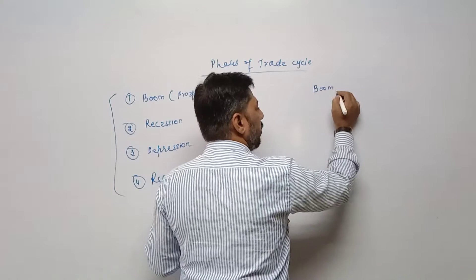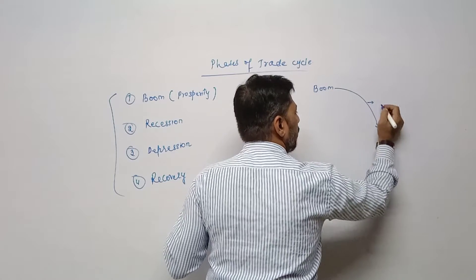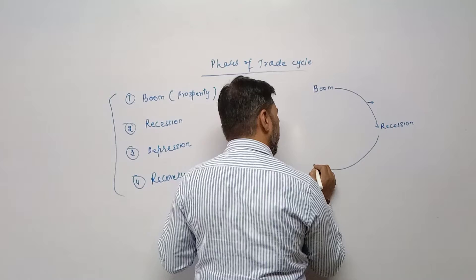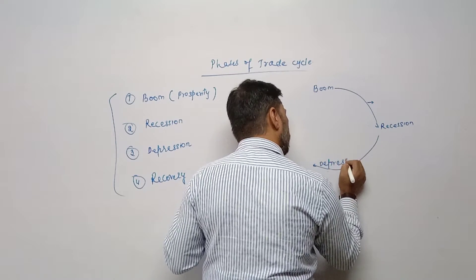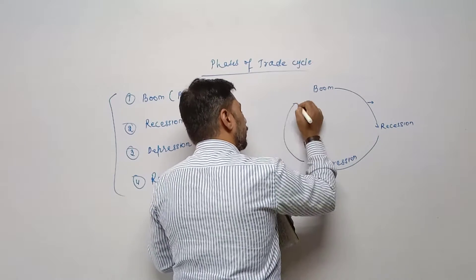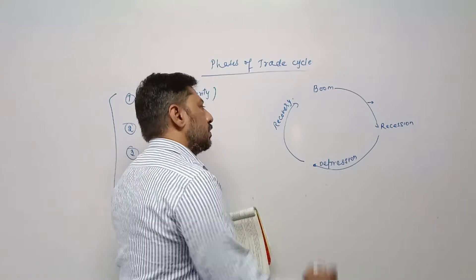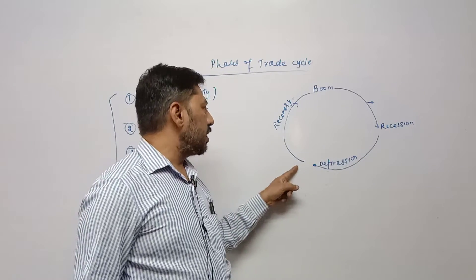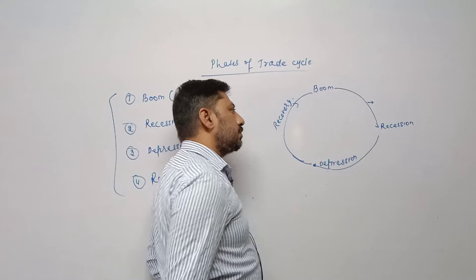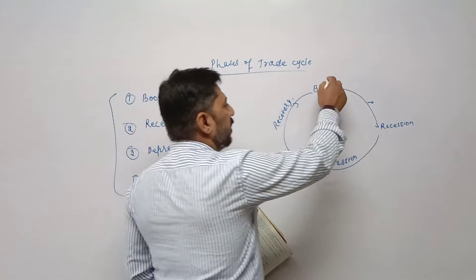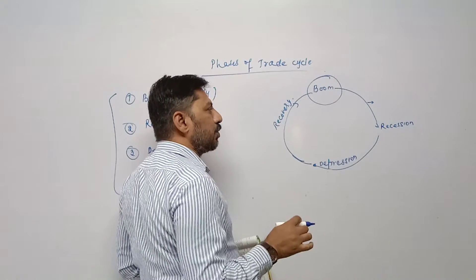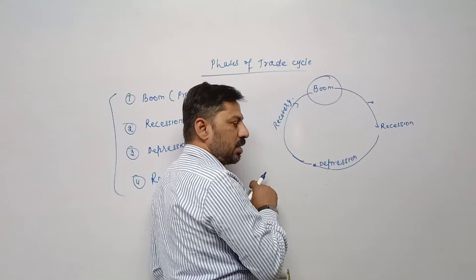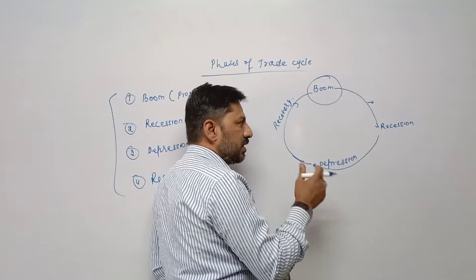First one is boom period, also called prosperity period. In simple language, it is the good time. When demand is high, production is high, employment level is high, income of each and every individual is high, and profit is high — that is called prosperity period. When, after prosperity period, a point comes when it starts falling down, that situation is called recession period. When demand, supply, production, and income are at the peak level and then start falling down, that stage is called recession period.